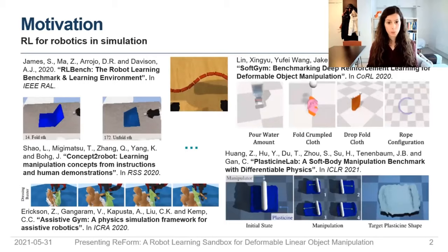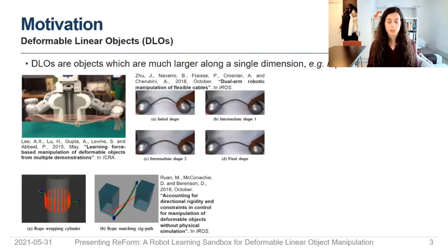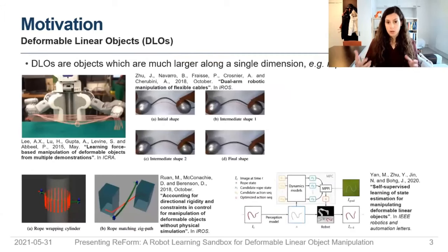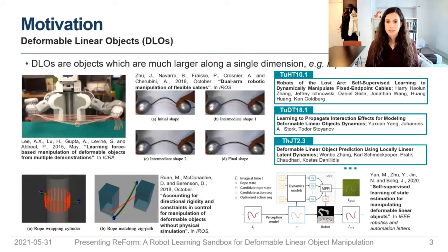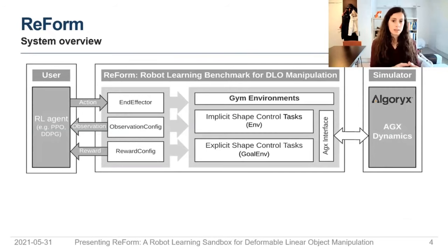In our work we focus on deformable linear objects such as ropes and cables, because this has been consistently studied and is still an open research topic. We can see at this conference there is still a lot of active work done on DLOs alone. REFORM is structured as an interface to the backend simulator AGX Dynamics, a set of environments, and a set of classes which we found are facilitators for changing the reinforcement learning problem and testing new tasks.